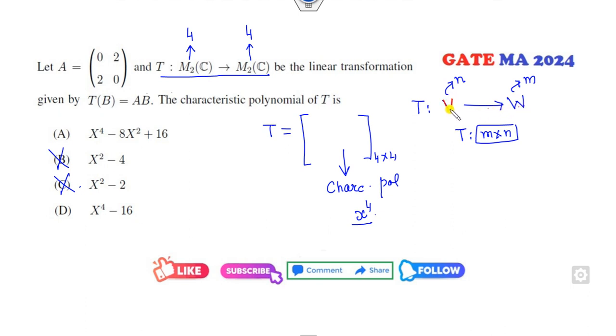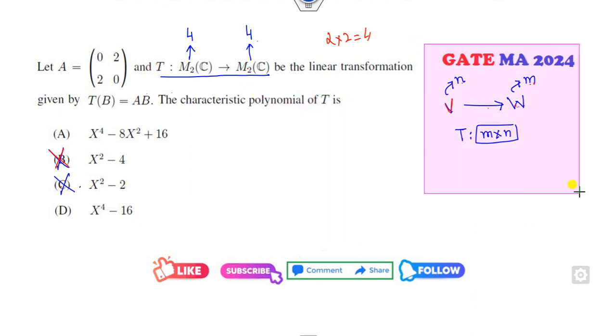I again repeat: whenever you have the linear transformation from V to W, the dimension of V is my n, dimension of W is m, then the matrix T has dimension m cross n. Because it's a matrix m2, dimension of 2 cross 2 will be my 4, so it's a 4 cross 4. So once you know it's 4 cross 4, the characteristic polynomial is of degree 4, so definitely B and C will be cancelled out.